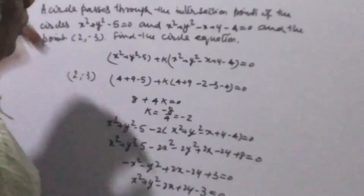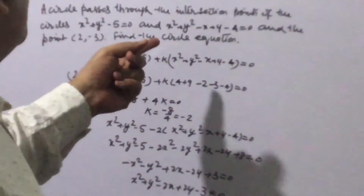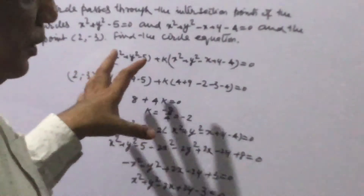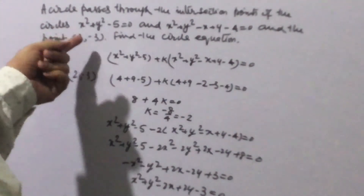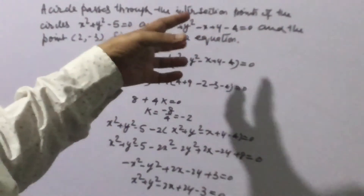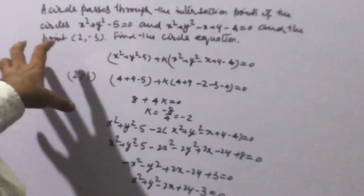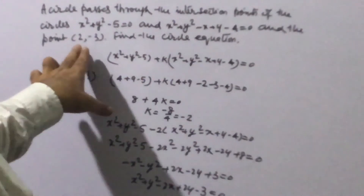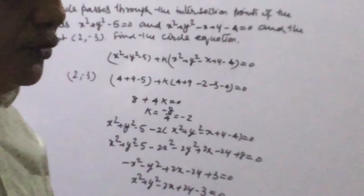This is how we find the equation of the circle passing through the intersection points of the given circles and through the point (2, -3). This is the easiest and most straightforward method. Another method would be to find the intersection points of the two circles, get two points, then find the equation through those two points and the third point (2, -3) — but that is a very lengthy method with more chances of making mistakes.